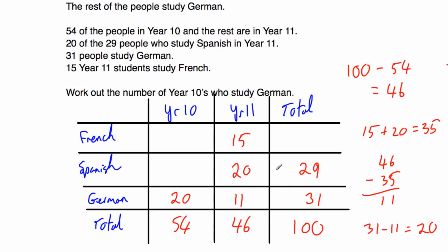You could have done this in a different order: French total = 100 minus 29 minus 31 equals 40. Year 10 French: 40 minus 15 equals 25. Year 10 Spanish: 29 minus 20 equals 9. Year 10 German: 54 minus 25 minus 9 equals 20. The answer is still 20.